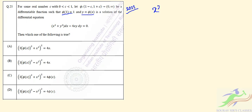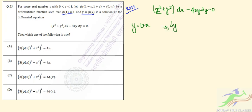Let's write the differential equation as: x squared plus y squared dx minus 4xy dy equal to 0. We will substitute y equal to vx, so dy will be v dx plus x dv. Substituting y equal to vx, we will have x squared plus v squared x squared dx minus 4vx squared dy.